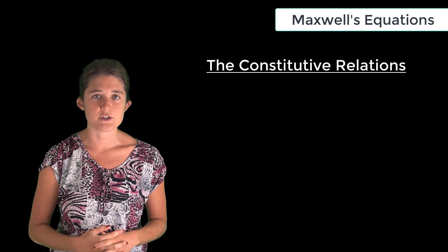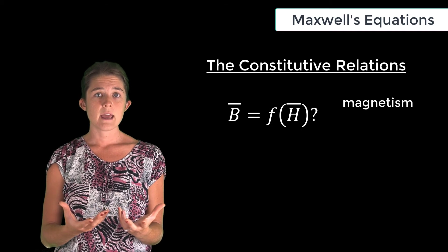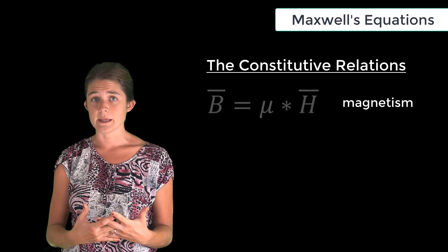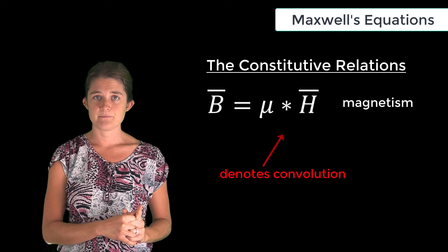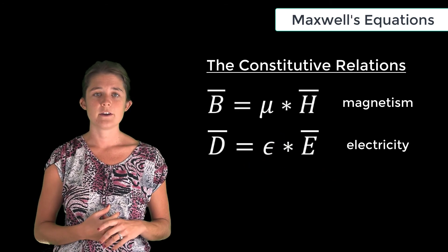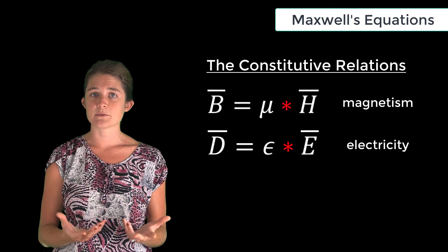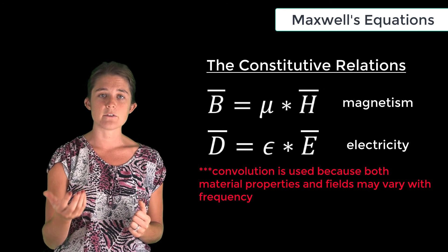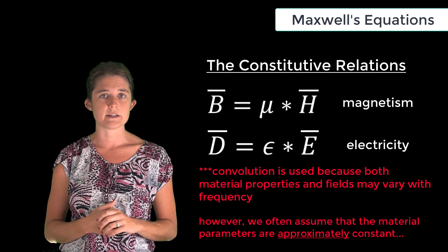To apply Maxwell's equations we must also know the relationship between the B field and the H field — both manifestations of magnetism — and between the E field and the D field — both manifestations of electricity. The magnetic flux density B equals the magnetic permeability mu convolved with the magnetic field H. Similarly, the electric flux density D equals the electric permittivity epsilon convolved with the electric field E. Convolution is used rather than simple multiplication because in the most general case, permeability and permittivity are both functions of frequency, as are the fields.